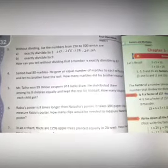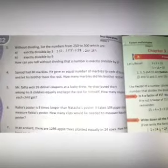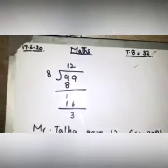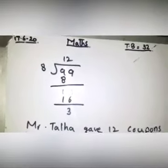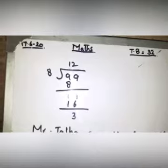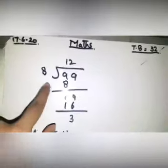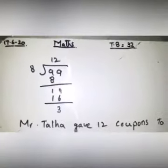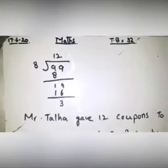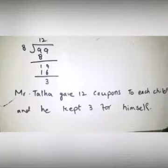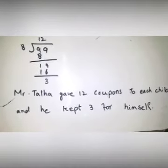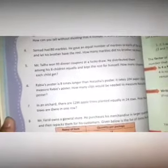Question number five: Mr. Talha won 99 dinner coupons at a lucky draw. He distributed them among his eight children equally and kept the rest for himself. How many coupons does each child get? You divide 99 by 8. When solving, 8 goes into 9 once, the remainder is 1, bringing down gives 19. Subtract 16 from 19 gives 3. So Mr. Talha gave 12 coupons to each child and kept 3 for himself.